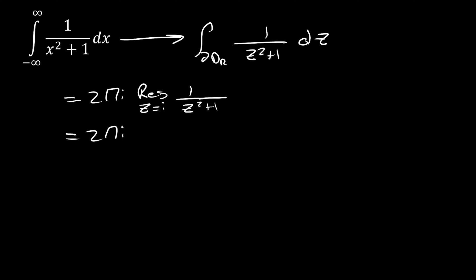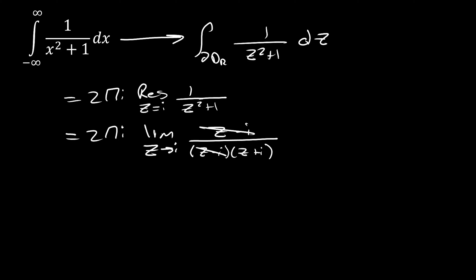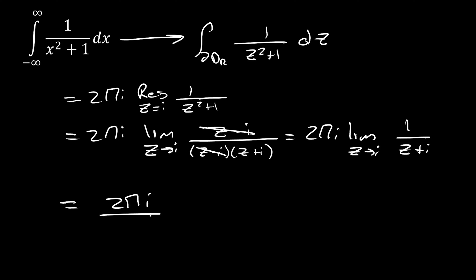Using the limit method to find our residue: this is 2πi times the limit as z goes to i of (z − i) divided by (z − i)(z + i). The (z − i) terms cancel, leaving 2πi times the limit as z goes to i of 1/(z + i). Evaluating gives 2πi divided by 2i, which is just π. And if you evaluate this with your favorite integral calculator or via a trig substitution, you will get the same result.